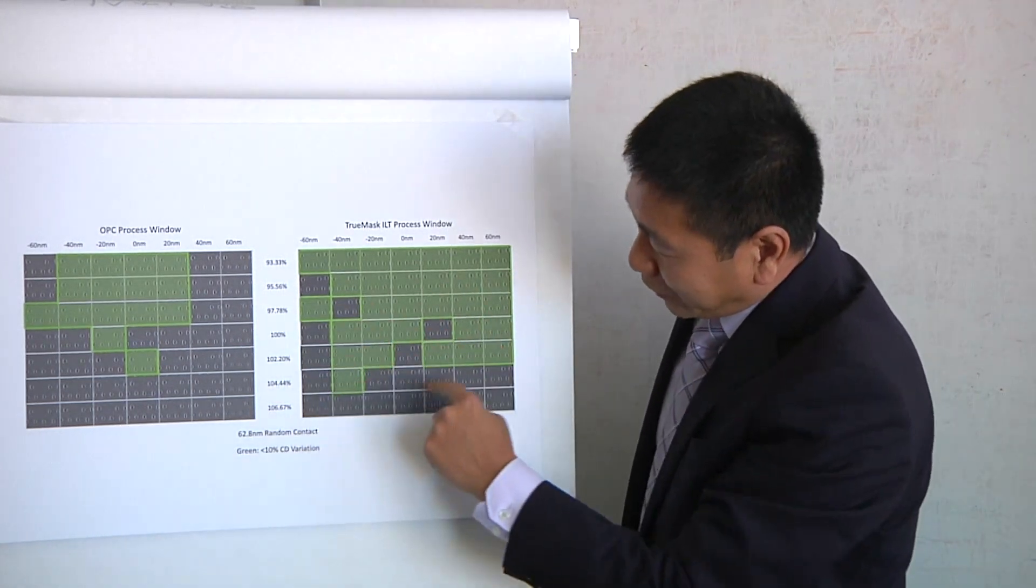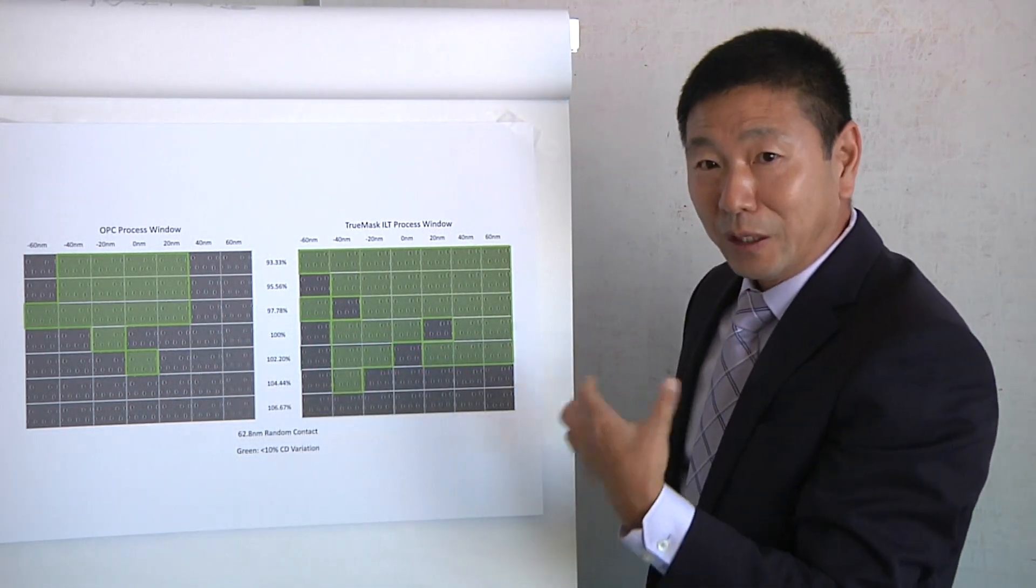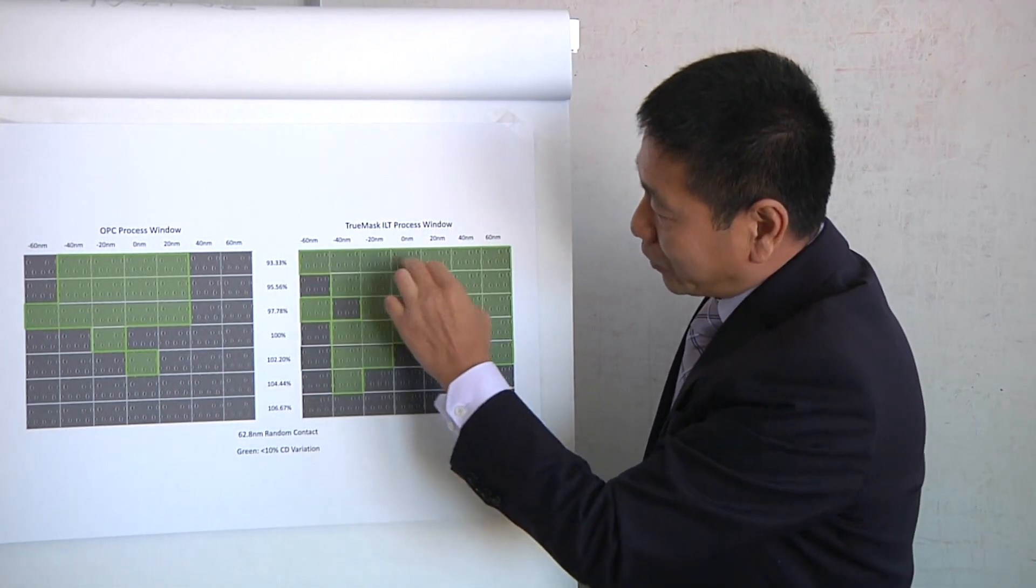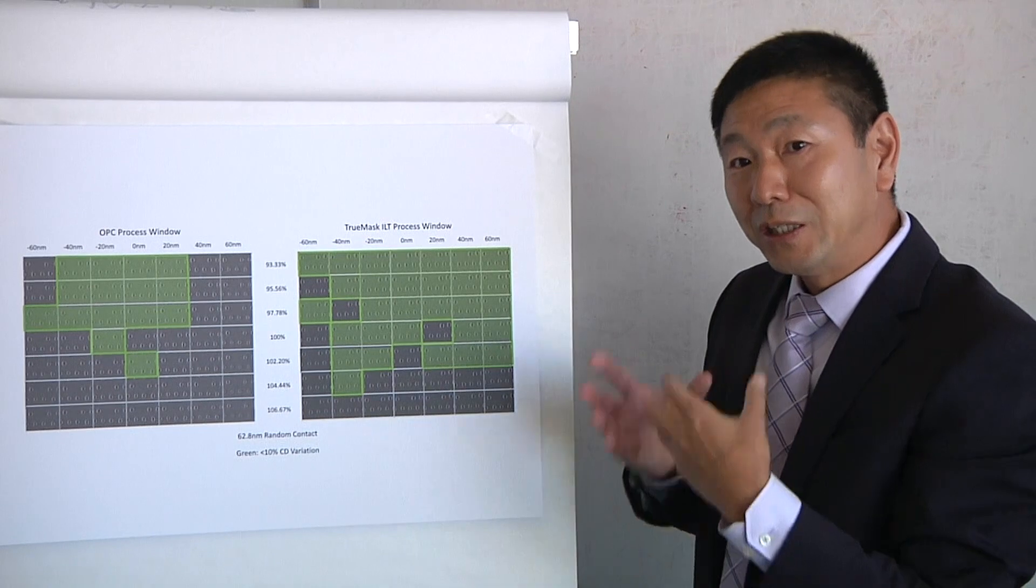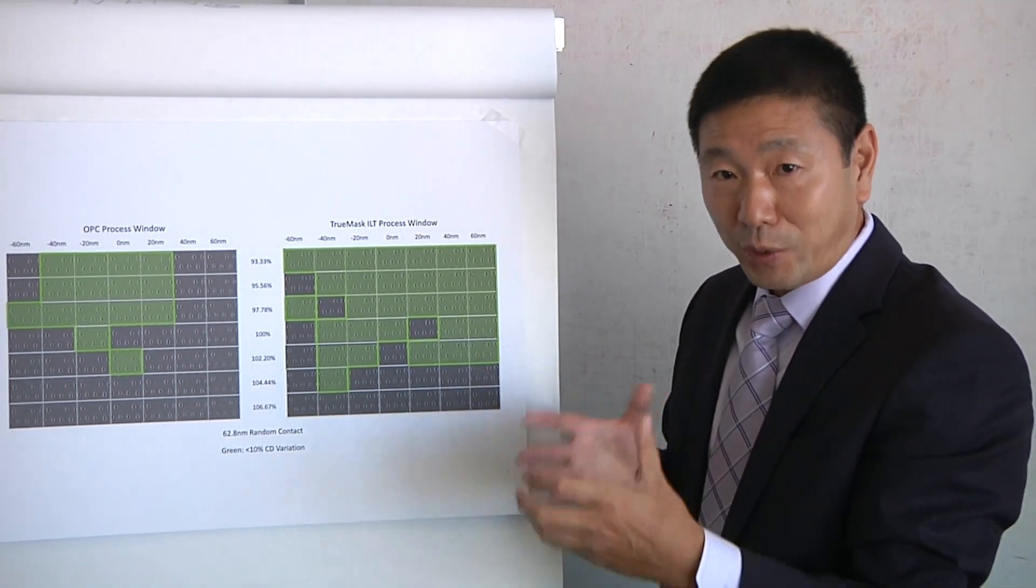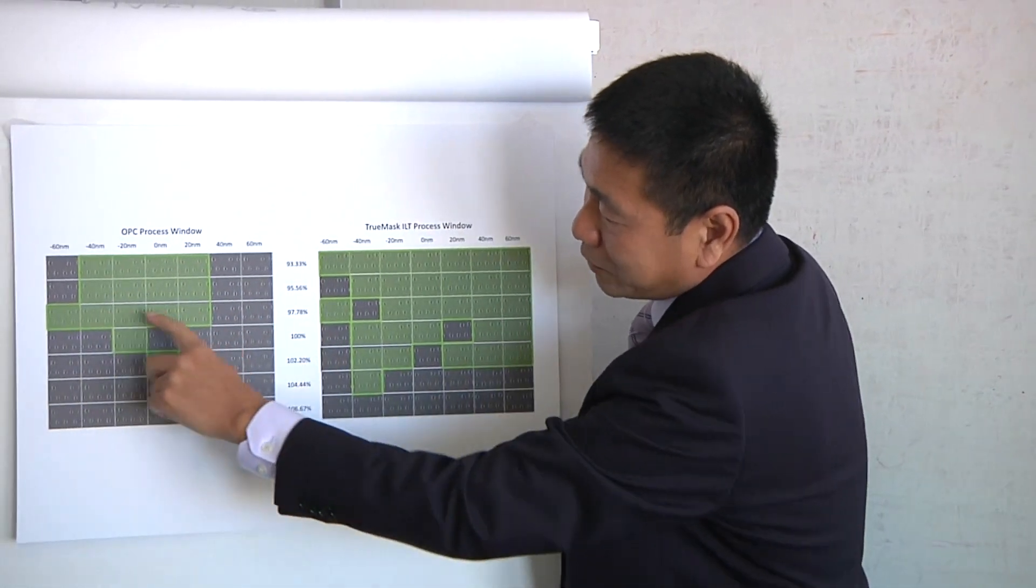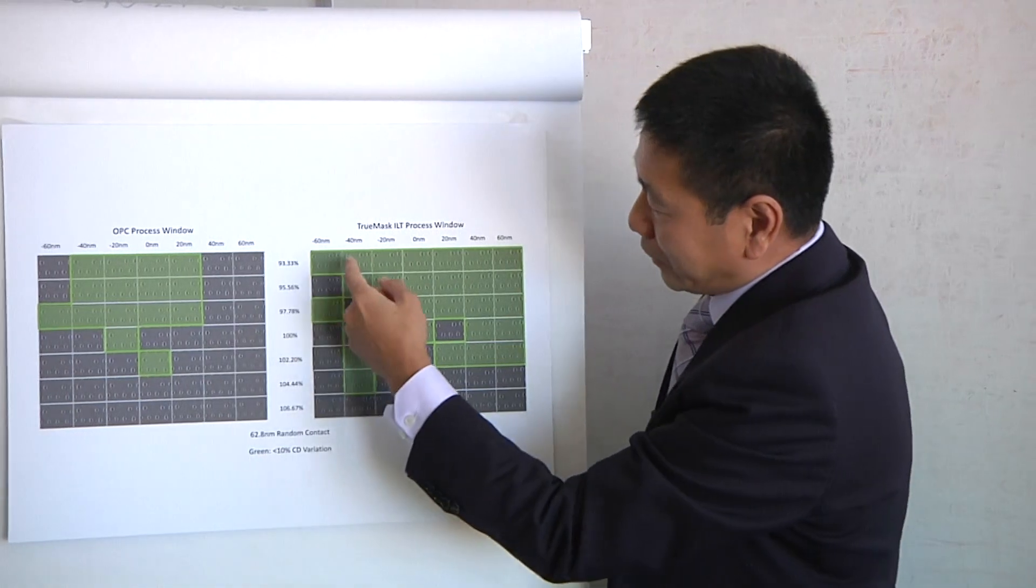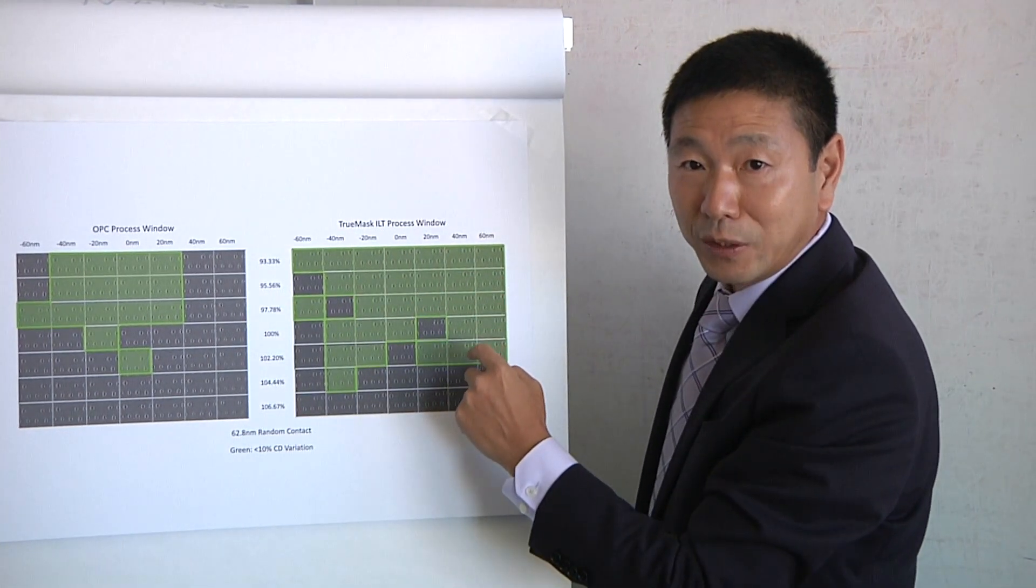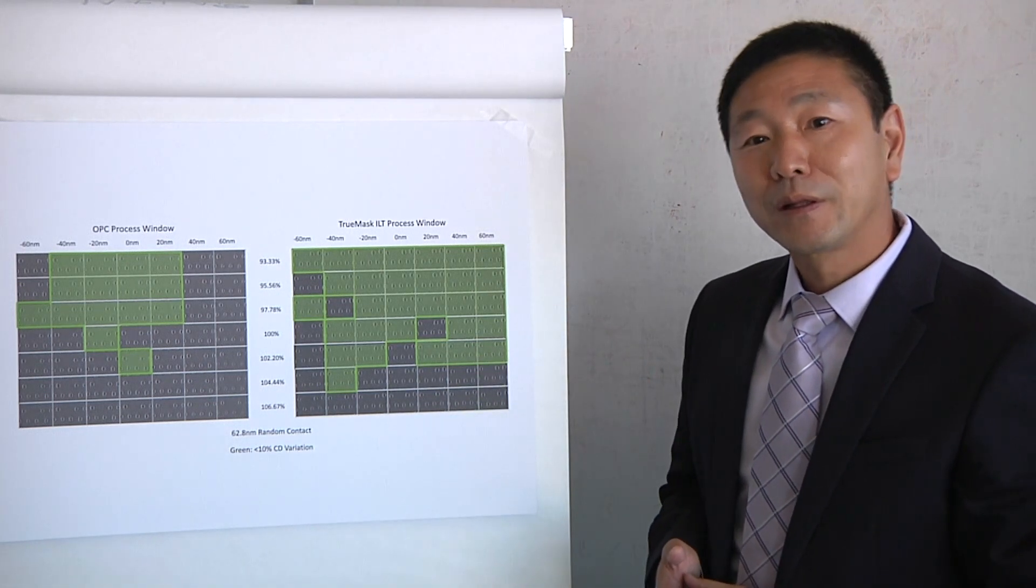You want all the contacts printed pretty much at the same size. That's what you see in all prints. And also, we measured the process window, and we highlighted those conditions, if the CD variation is within plus minus 10%, that's called process window, right? So you can see here, this is the OPC process window, and this is our TrueMask ILT process window, which is more than 100% larger than OPC.